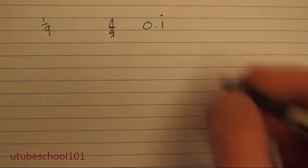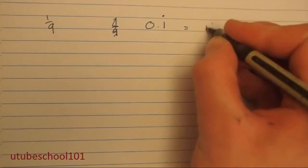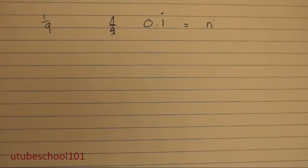So to start with we're going to label, we're going to put this into a formula. We're going to say 0.1 recurring is equal to n.